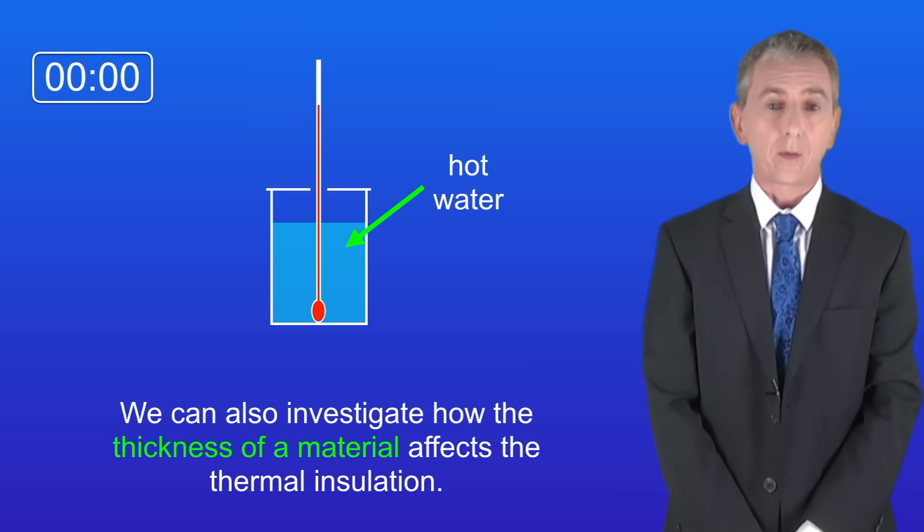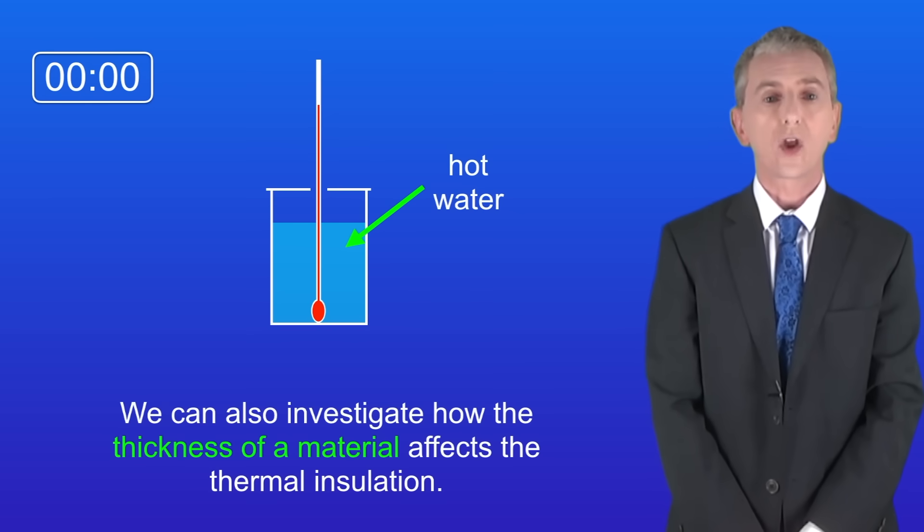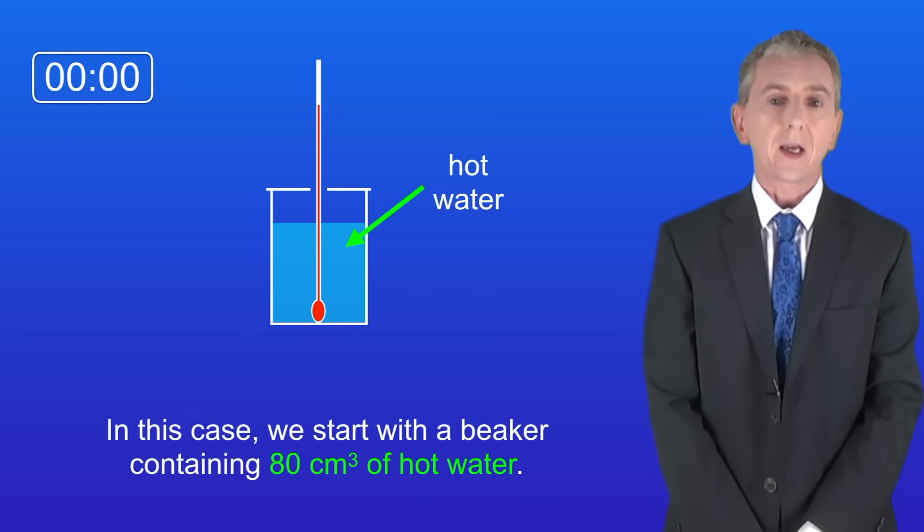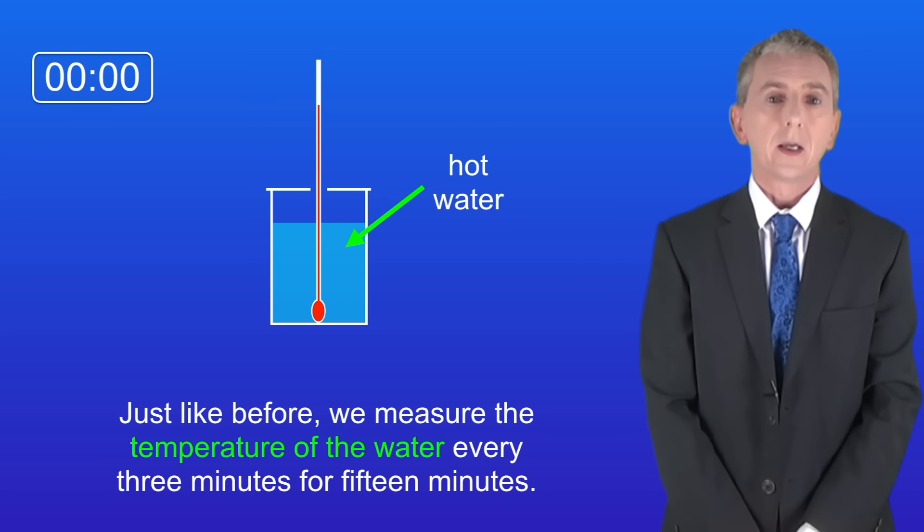Okay now we can also investigate how the thickness of a material affects the thermal insulation. In this case we start with a beaker containing 80 centimeters cubed of hot water. And just like before we measure the temperature of the water every three minutes for 15 minutes.